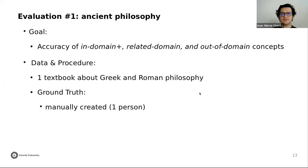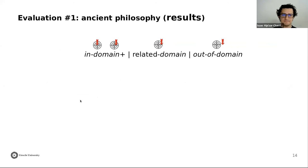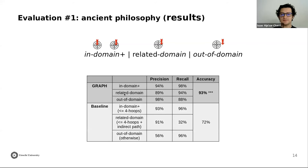Moving to our second evaluation domain — ancient philosophy — we tested the accuracy of in-domain, related domain, and out-of-domain classification. We used only one textbook about Greek and Roman philosophy, and the ground truth was created manually. When measuring results using three labels, the accuracy of our approach is 20 points more than the baseline, and we reach quite good precision and recall across all three labels.